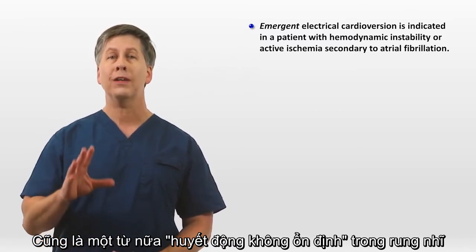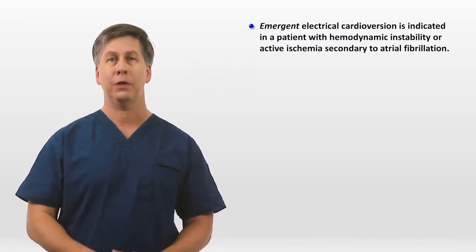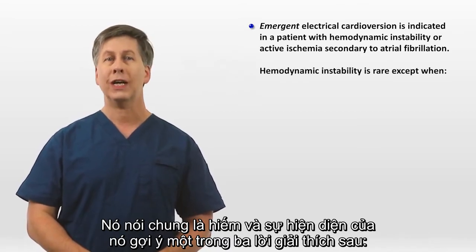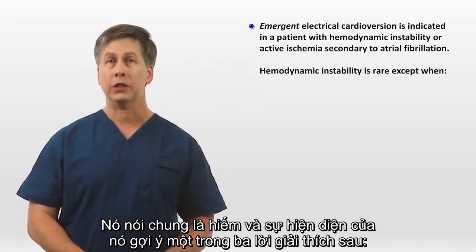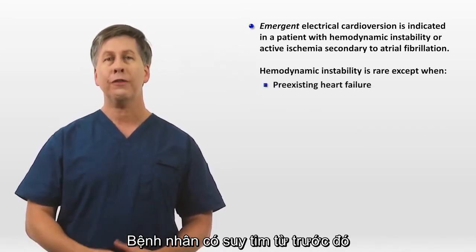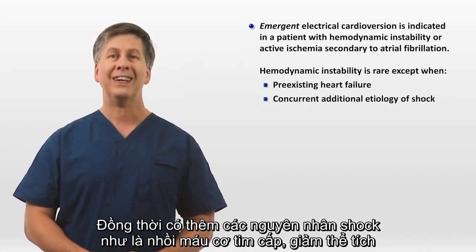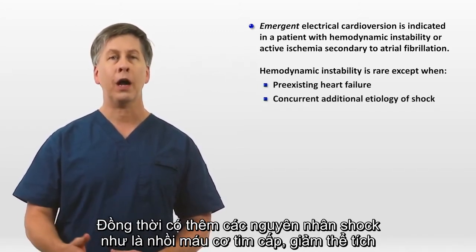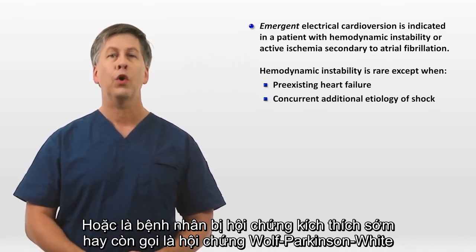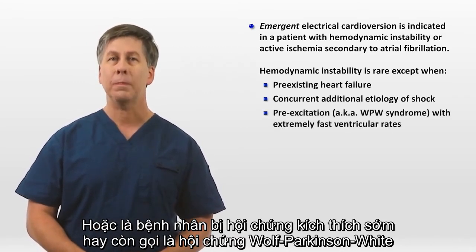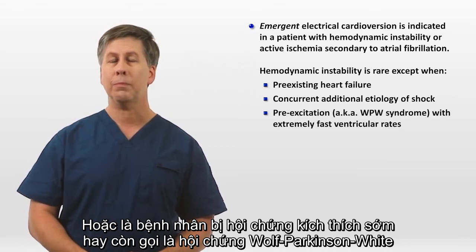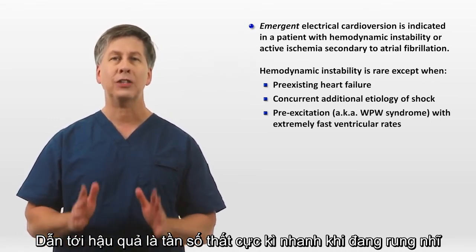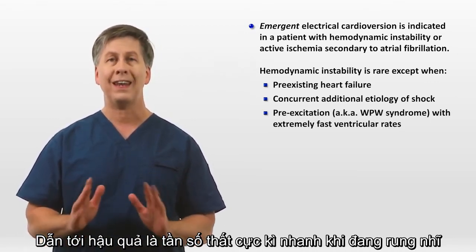A word about hemodynamic instability in AFib: this is generally rare, and its presence suggests one of three explanations. The patient has pre-existing heart failure. There is a concurrent additional etiology of shock, such as an acute MI or volume depletion. Or the patient has pre-excitation — also known as Wolff-Parkinson-White syndrome — a consequence of which is extremely fast ventricular rates when in AFib.